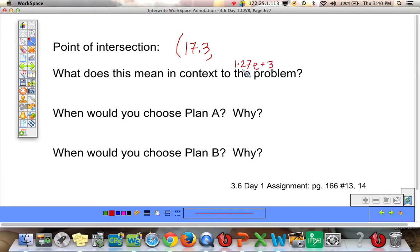And that means it's scientific notation. So we're going to move the decimal 3 to the right. So 1, 2, 3. There it is. 1,270.